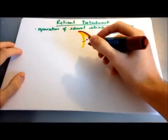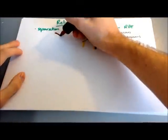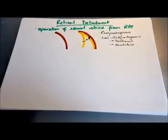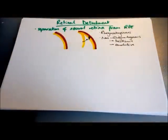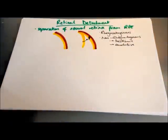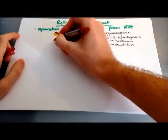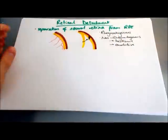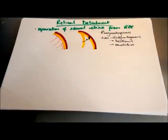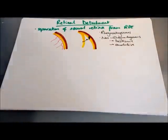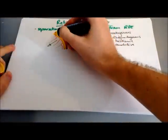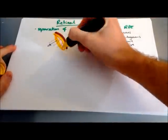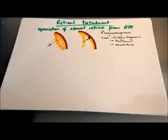Tractional retinal detachment is one of the non-rhegmatogenous causes. In this, there's contraction of the vitreous, and this can be from neovascularisation in diabetic retinopathy, where new blood vessels grow into the vitreous, causing traction on the neural retina. As they contract, it pulls on the neural retina and pulls it away, causing the detachment.